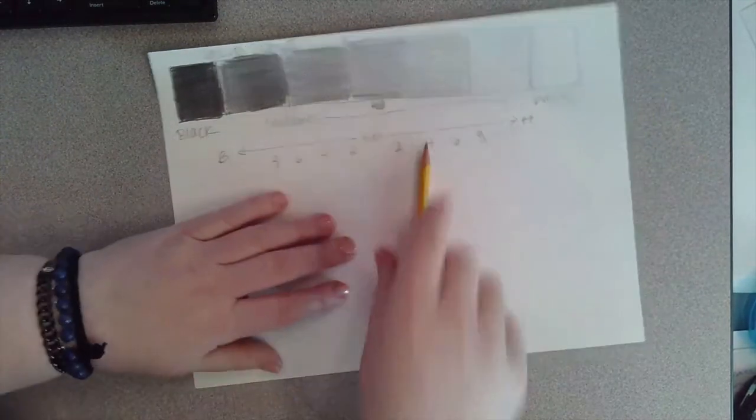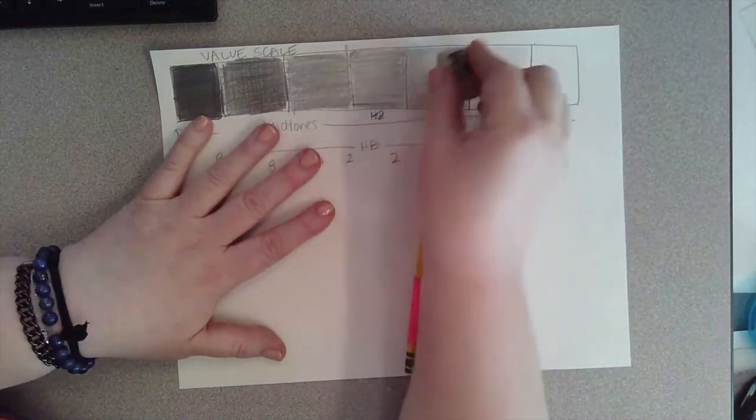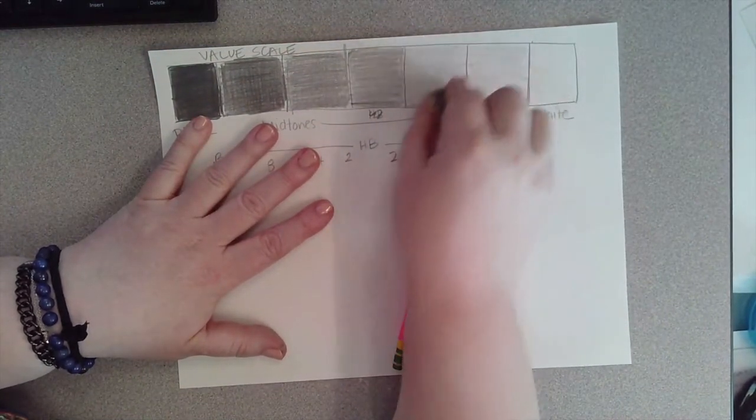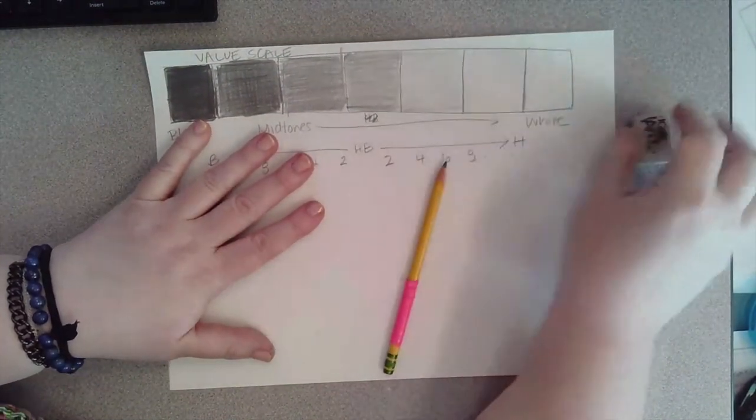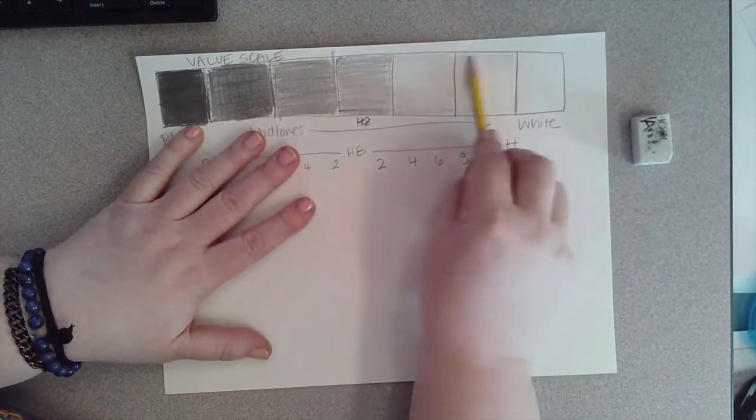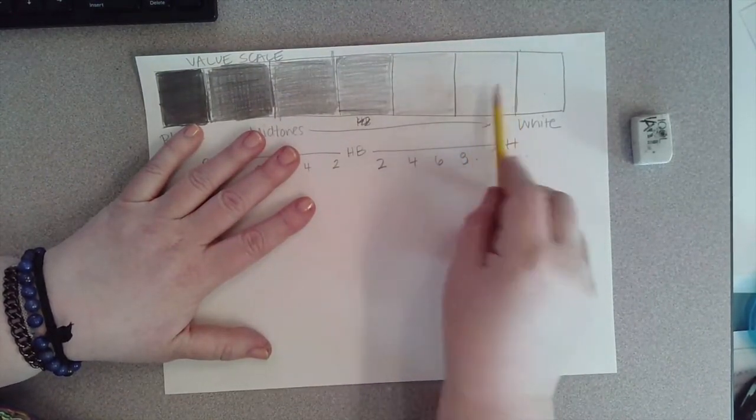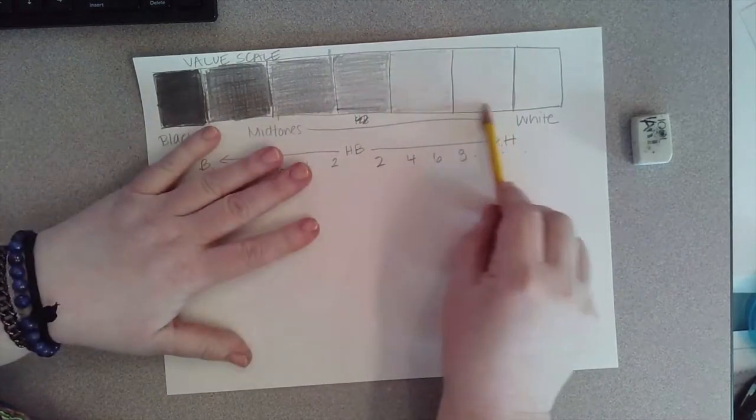When we're squinting, we should be able to see the difference. If we're still getting a little bit too close, we can always lift it up a little with the eraser and go back in a little bit lighter.